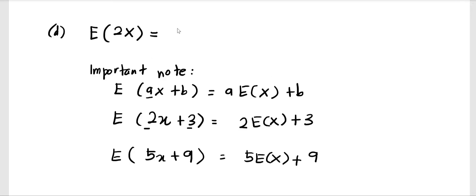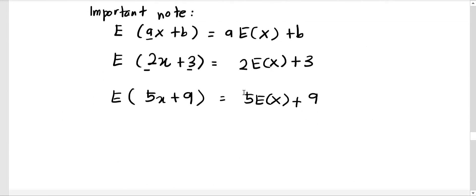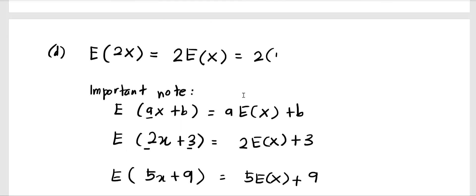Applying this to E(2X): a equals 2, and b equals zero, so we get 2·E(X). The value of E(X) was calculated in question a as 1.7, so 2 times 1.7 equals 3.4.